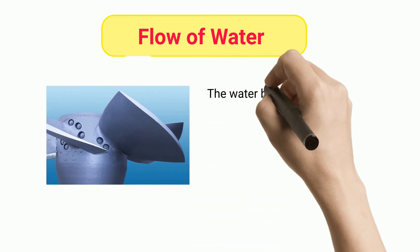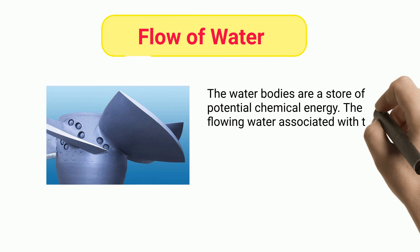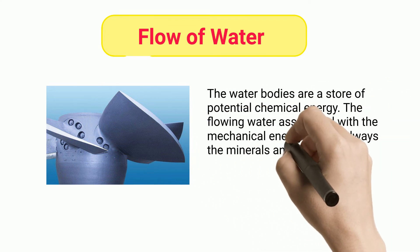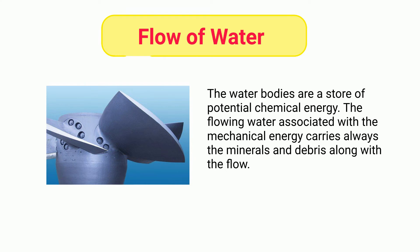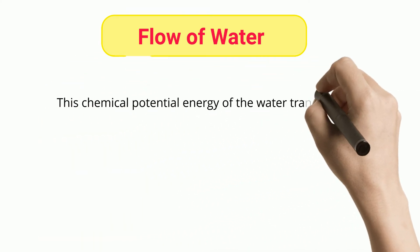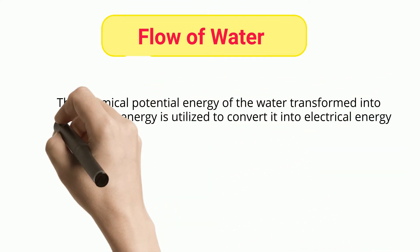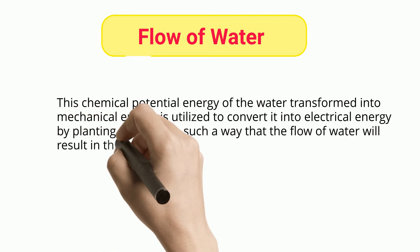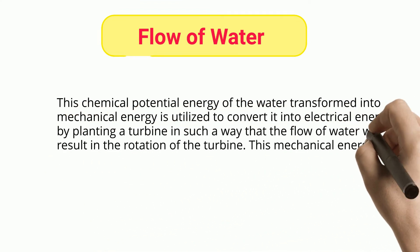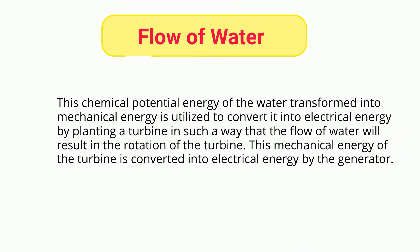Flow of water: The water bodies are a store of potential chemical energy. The flowing water associated with mechanical energy carries minerals and debris along with the flow. This chemical potential energy of the water transformed into mechanical energy is utilized to convert it into electrical energy by planting a turbine in such a way that the flow of water results in the rotation of the turbine. This mechanical energy of the turbine is then converted into electrical energy by the generator.